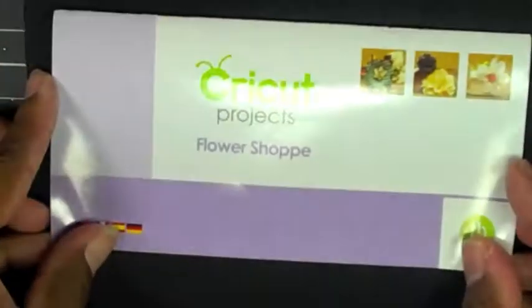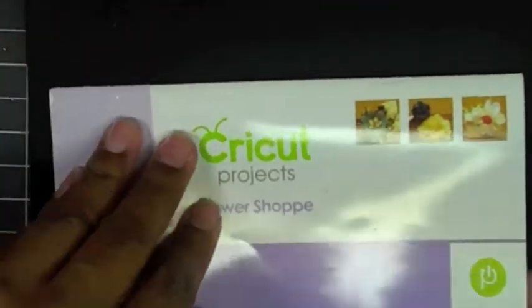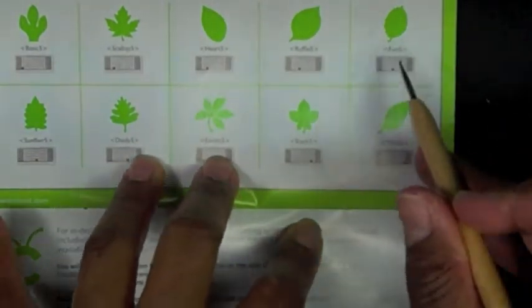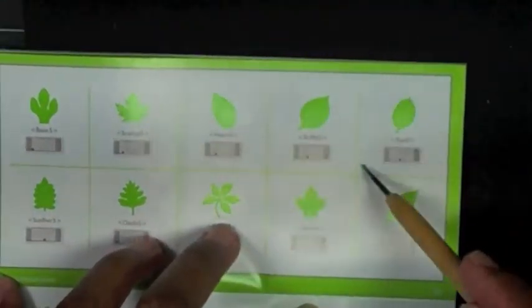Hi and welcome to another tutorial from Kim's Crafty Corner. I'm going to show you how to make a poinsettia using one of the leaves from Flower Shop. I'm going to use the leaf that is on page 22 and it's fun 5. You can see it at the top right.